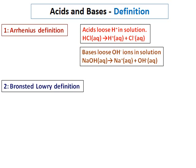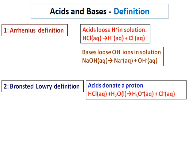So we have the second definition called the Bronsted-Lowry definition. In this case, acids donate a proton — just note the difference from the previous case where we said it loses hydrogen. Here, hydrochloric acid reacts with water: HCl donates one of its hydrogens to water, and water becomes H₃O⁺. Hence, HCl is an acid.